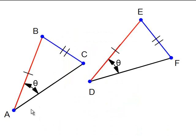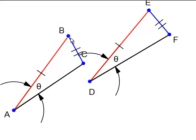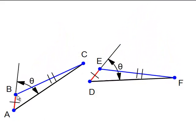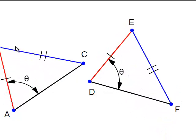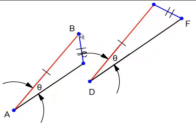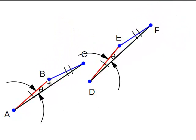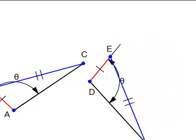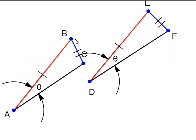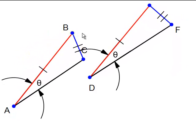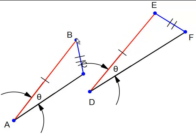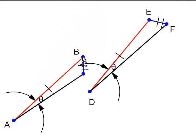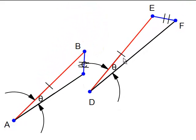Let's do a demo of this. This is angle-side-side. You'll notice that sometimes it works, and sometimes it doesn't. Right there, clearly these two triangles are not congruent — this one is obtuse, this one is acute. So angle-side-side is not a valid congruence option.